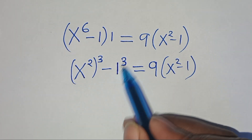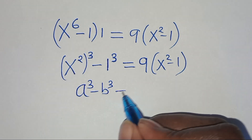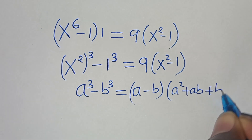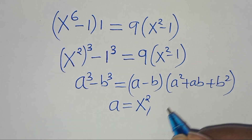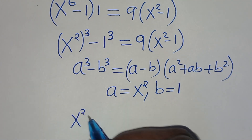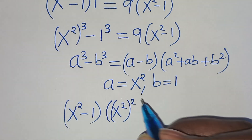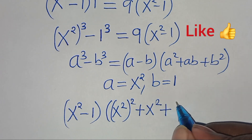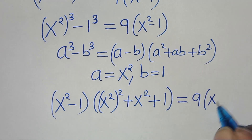Now this is actually the difference of two cubes, expressed as a to the power of 3 minus b to the power of 3, which we can express as a minus b, then a squared plus a times b plus b squared. From this equation here, we have x to the power of 2 minus 1, then times x to the power of 2 squared plus x to the power of 2 times 1, which is x to the power of 2, then plus 1 squared, which is 1. And this is equal to 9 multiplied by x to the power of 2 minus 1.